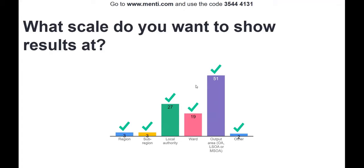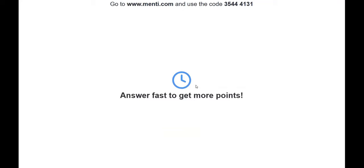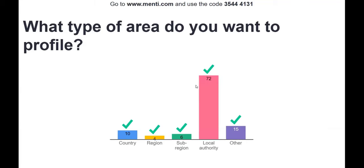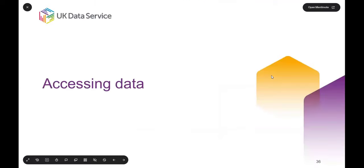A poll showed that a lot of people want to look at smaller geographies — output areas, then wards, then local authorities. The question of what type of area to profile showed a dominance of local authority responses, with some sub-region, region, and country answers. On the question of parish-level data, that's something that would need to be researched further — they are an electoral division but may not be large enough for ONS to publish at that level.